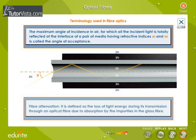Fiber attenuation is defined as the loss of light energy during its transmission through an optical fiber due to absorption by the impurities in the glass fiber.